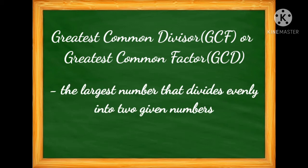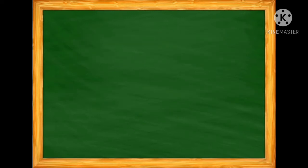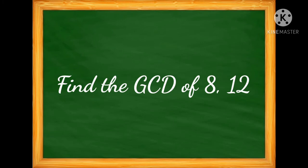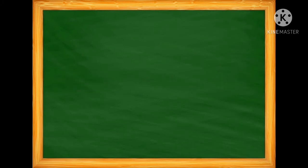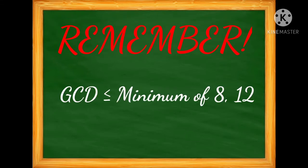Greatest common divisor or greatest common factor is the largest number that divides evenly into two given numbers. Most likely when you have a word problem, it's going to give you two numbers and then ask you for the greatest common divisor. For example, find the GCD of 8 and 12. One thing you're going to note is that the greatest common divisor